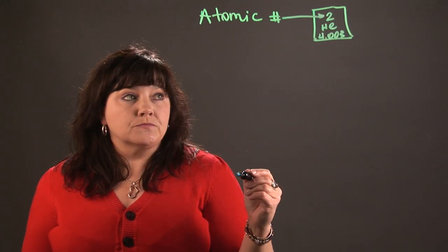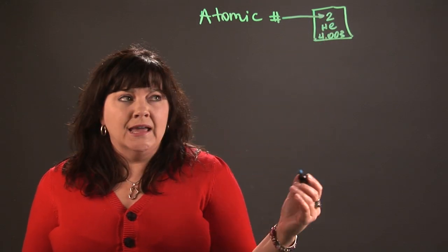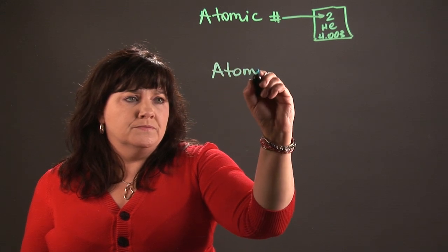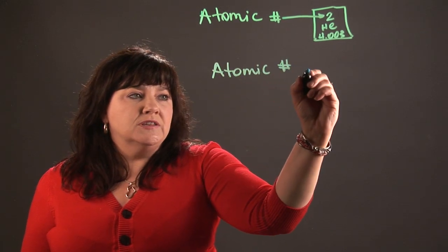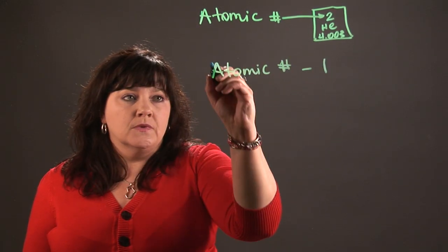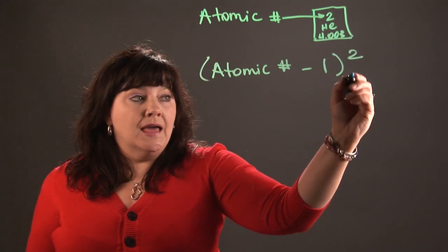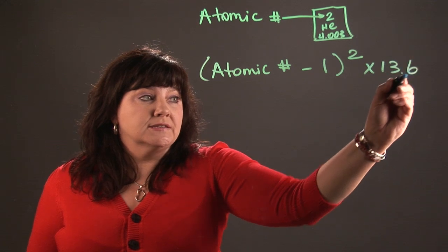That's what we want to look for. So the way that we calculate ionization energy is we take the atomic number and subtract 1, then we square that answer, and then we multiply it by 13.6.